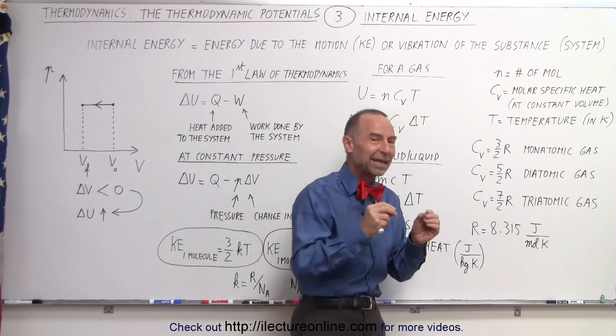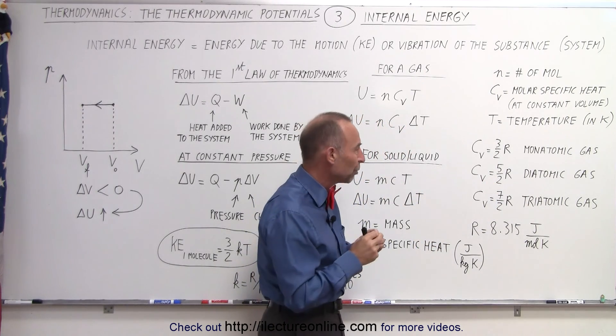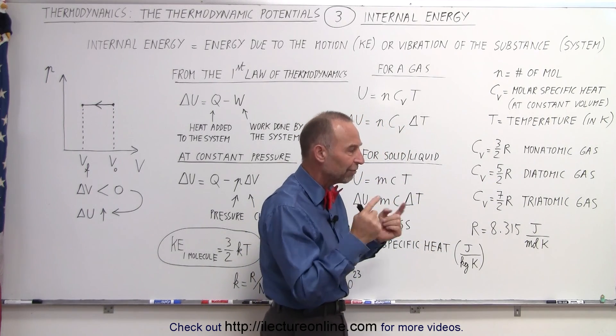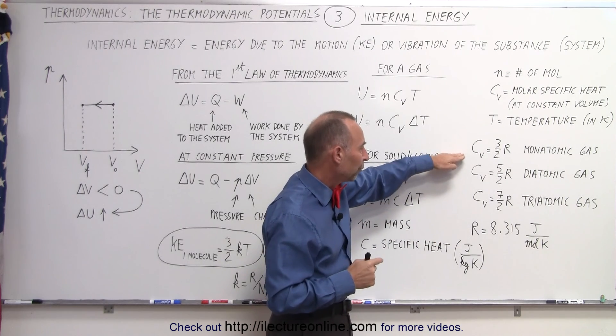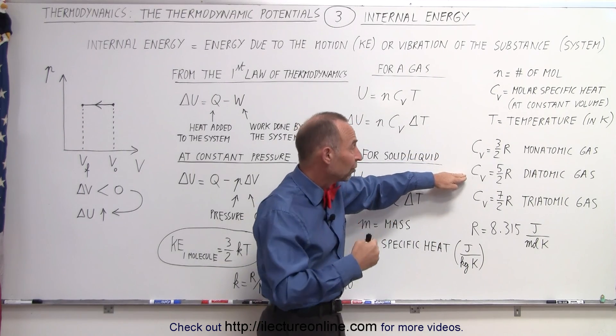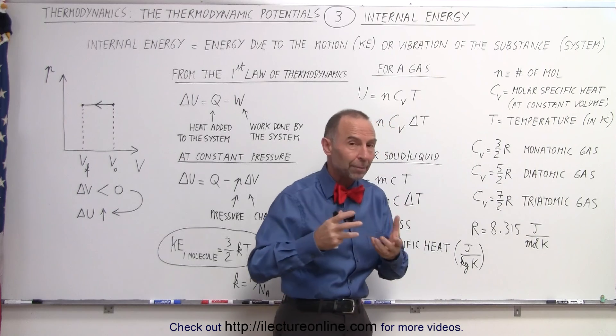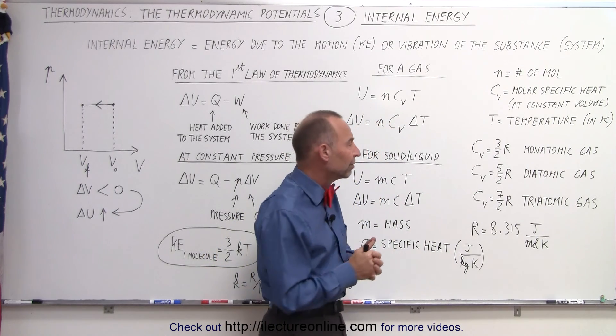you can have different kinds of kinetic motion. We can have rotations and vibrations. And so, therefore, the C sub V increases as the molecules become more complicated and have what we call more degrees of freedom.